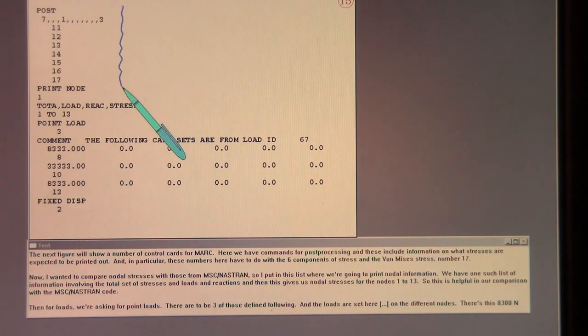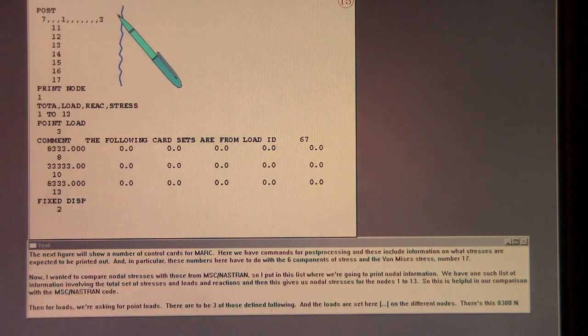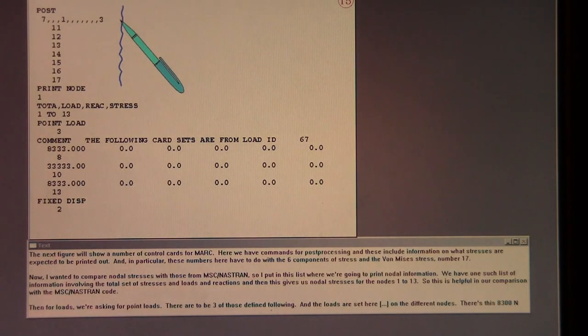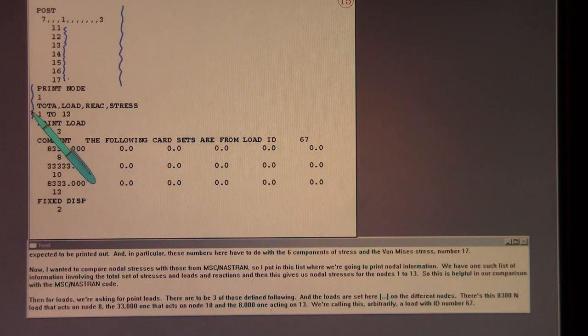The next figure will show a number of control cards for MARC. Here we have commands for post-processing. And these include information on what stresses are expected to be printed out. And in particular these numbers here have to do with the six components of stress and then the von Mises stress, number 17. Now I wanted to compare nodal stresses with those from MSC Nastran. So I put in this list where we're going to print nodal information. We have one such list of information involving the total set of stresses and loads and reactions. And then this gives us nodal stresses for the nodes 1 to 13. So this is helpful in our comparison with the MSC Nastran code.